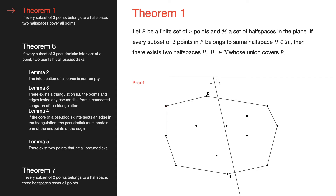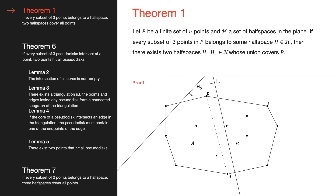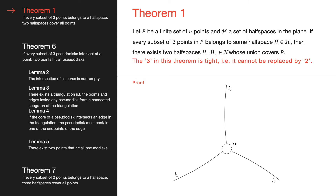Otherwise, if h1 intersects the convex hull, it must intersect at two edges. Let p and q be two points contained in h1 that are the endpoints of the two edges h1 intersects. The line through p and q splits the convex hull into two regions, A and B, one of which is covered by h1 — we assume region A. Let r be a point on the convex hull not covered by h1. The points p, q, and r must be covered by some half-space h2. Since h2 contains p and q, it must cover either region A or region B. If it covers region A, it covers more points than h1, a contradiction. Therefore h2 must cover region B, and h1 and h2 together cover all points in P.